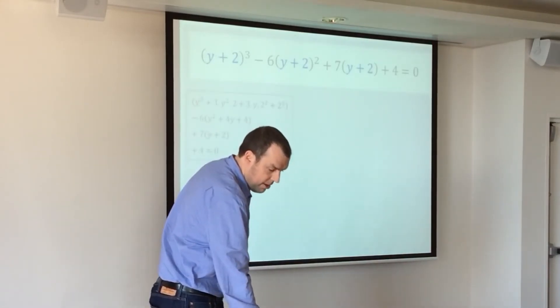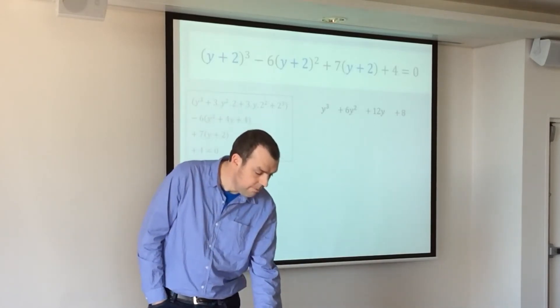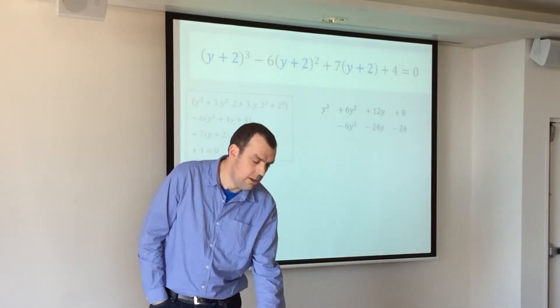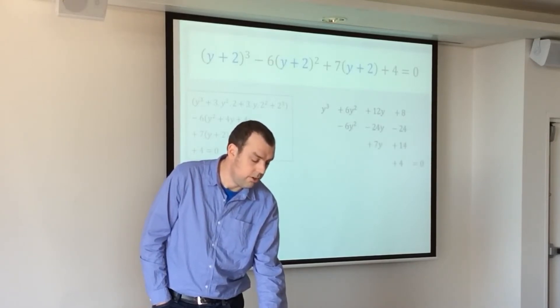If we expand bit by bit, we get, there's our cubic part, there's our quadratic part, there's our linear part, and our constant.